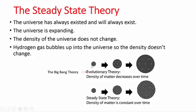Let's have a look. The evolutionary theory, the Big Bang Theory, says the universe is expanding and it was once more dense. It's becoming less dense because you can see the distance between these galaxies or particles is increasing, so it becomes less dense.